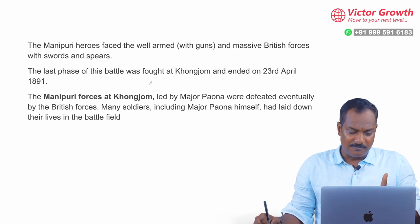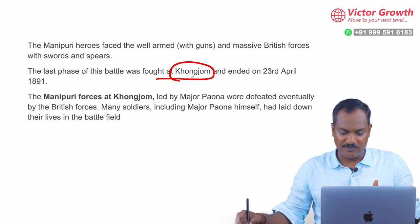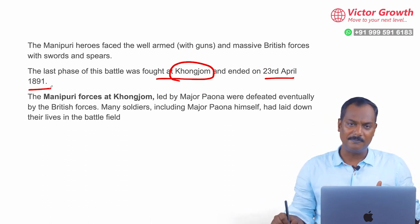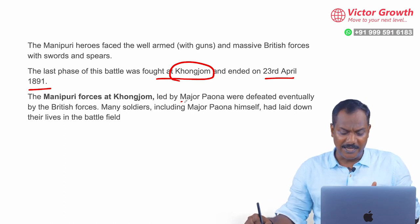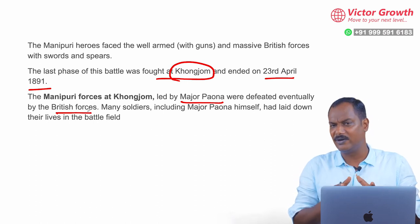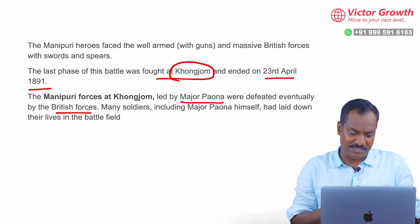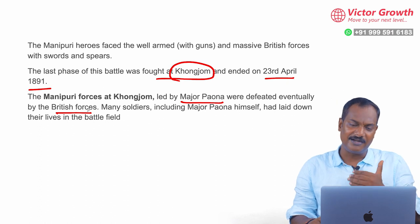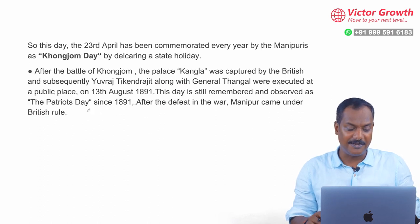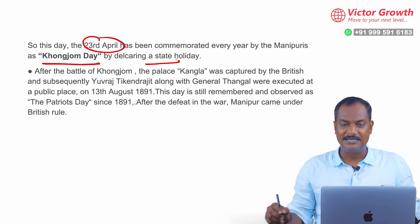This battle is a possible exam question. The battle was fought at a place called Khongjom on 23rd April 1891. Major Paona was defeated eventually by the British forces. Similar to the Lachit Borphukan-based history in Assam, in Manipur also we had one such occasion where the British defeated the Manipur forces, but Major Paona was still termed as a brave and courageous person. In fact, we celebrate Khongjom Day on 23rd April every year and it is declared as a state holiday.